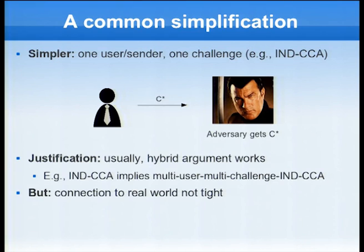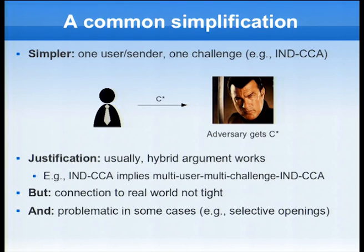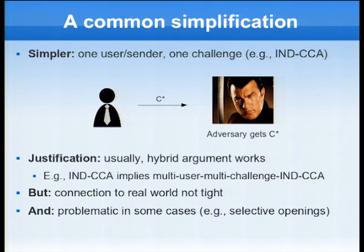I want to highlight two drawbacks that this simplification has. First of all, the connection to the real world is not tight. If we have a scheme which satisfies this simplified security notion, then in translating this experiment to the real world experiment, we lose a factor in the security reduction. That means our scheme gets less secure if we use it for more users. The second problem is that certain settings where we have encryption schemes with specific properties, such as selective opening security, we simply cannot restrict ourselves to a one-challenge or one-user setting because the usual hybrid argument fails.